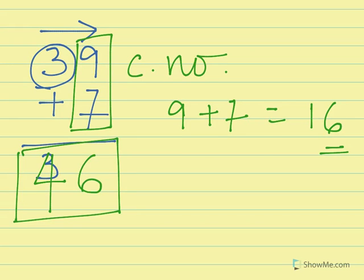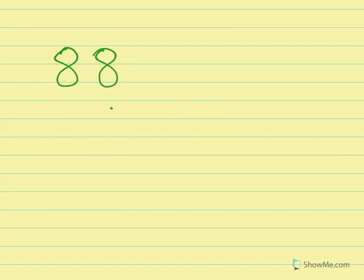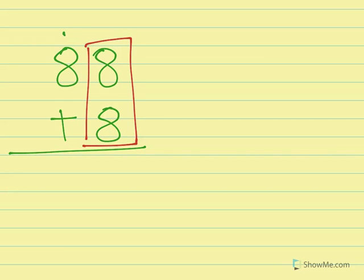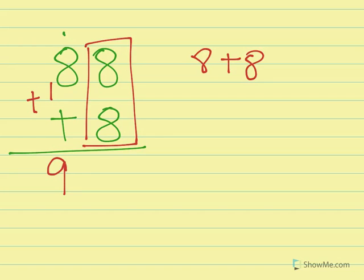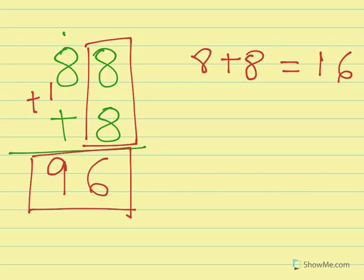Let us take another example: 88 plus 8. In the tens position, 8 is there. In the ones position, 8 plus 8 is a carrying number, so the tens digit 8 increases by 1 to become 9. The n number of 8 plus 8 is 6, as 8 plus 8 is 16. So our final answer is 96.